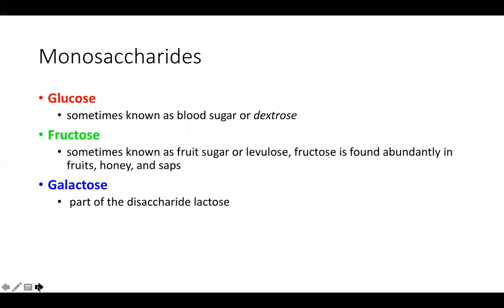Glucose is otherwise known as blood sugar or dextrose. Fructose is otherwise known as fruit sugar or levulose, and it's found in fruits, honey, and different saps. Galactose is not commonly found as a single sugar, but appears as part of the disaccharide lactose.